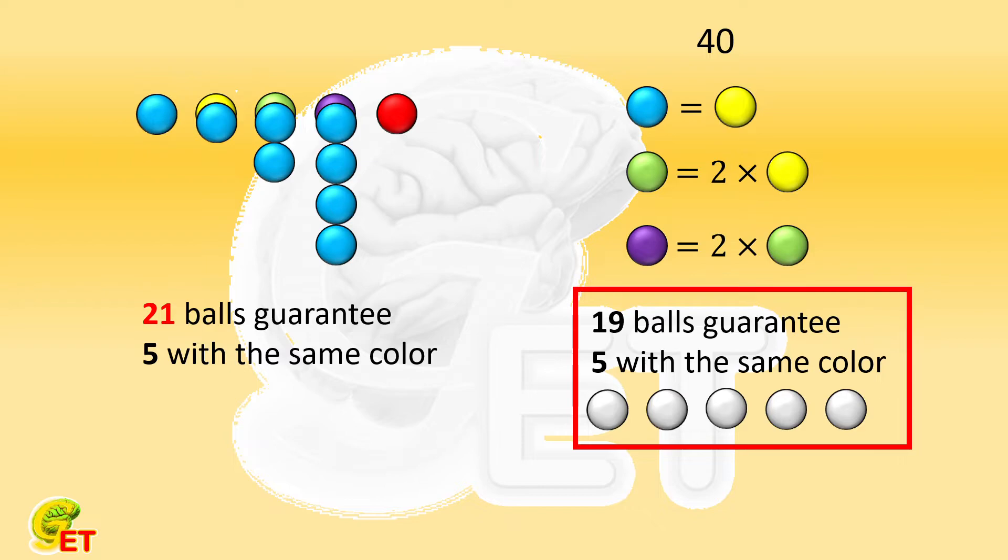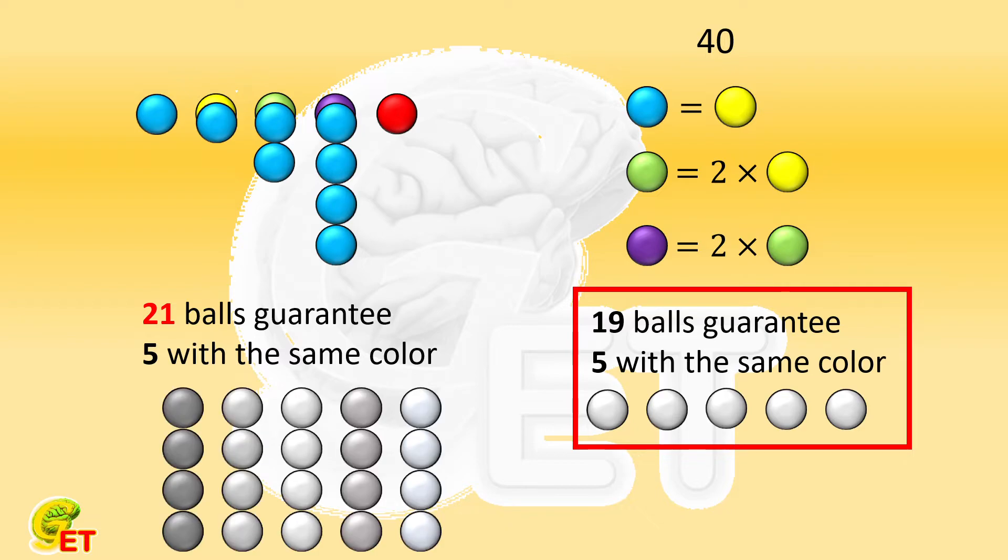The reason is very simple. If we want to grasp as many balls as possible and at the same time make sure no 5 balls have the same color, we can grasp up to 4 of each ball, for a total of 5 colors. 4 by 5 equals 20, so there are a total of 20 balls. If we grasp the 21st, no matter what color it is, there will be 5 balls of one color.